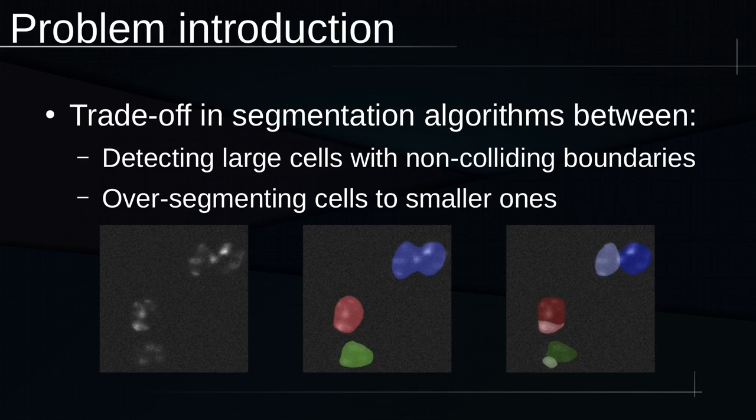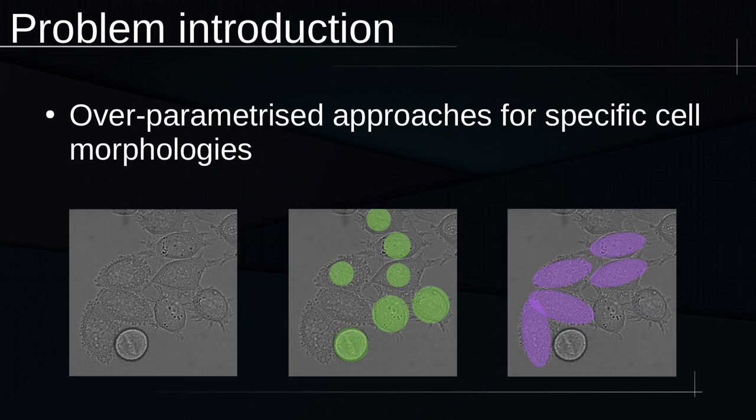Now we deal with the trade-off in segmentation algorithms being over-segmenting and under-segmenting cells. In the picture in the middle you can see the two cells at the top part are incorrectly segmented as one, but when we try to correct this mistake we introduce more mistakes as the picture to the right indicates.